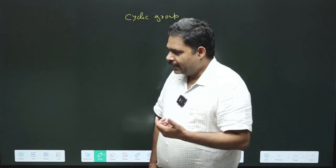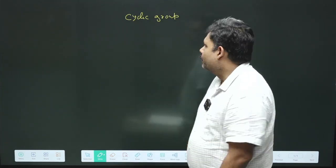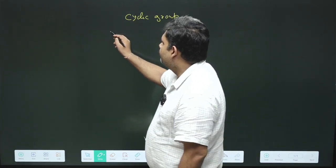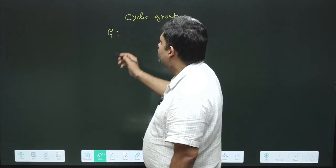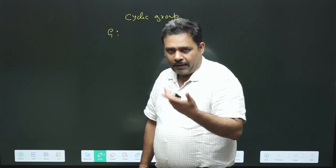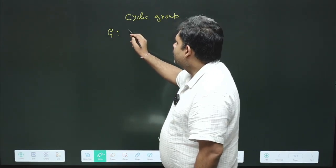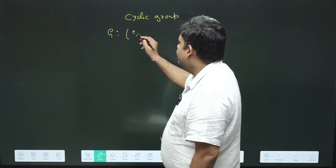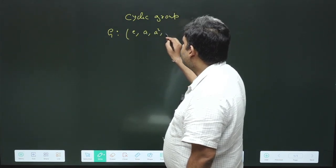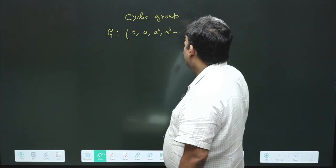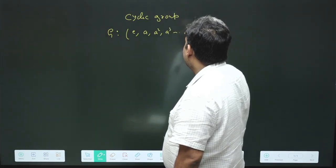So what are these groups? The cyclic group has some beautiful properties. If we define any group G and it is basically of order M, then G can be defined as identity E, A, A square, A cube up to A to the M minus 1.